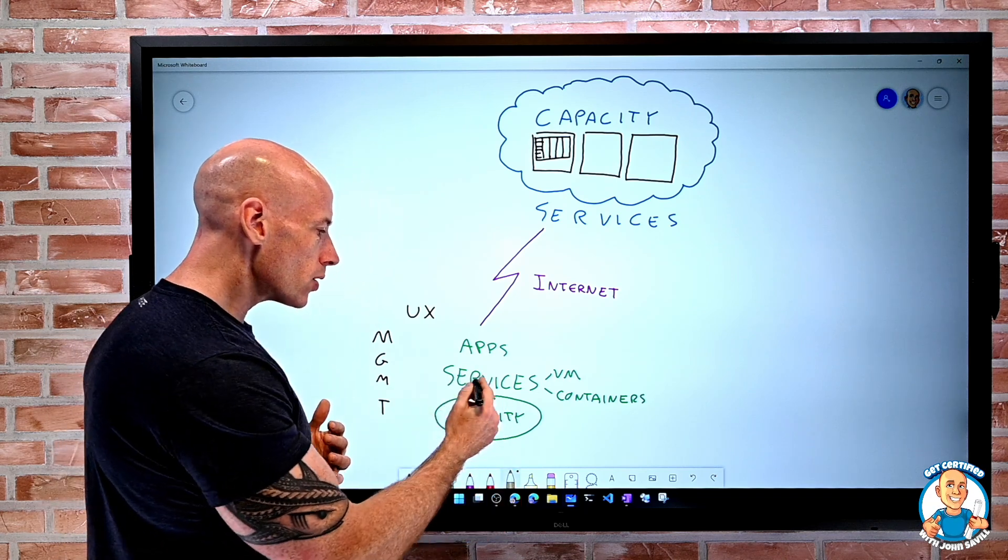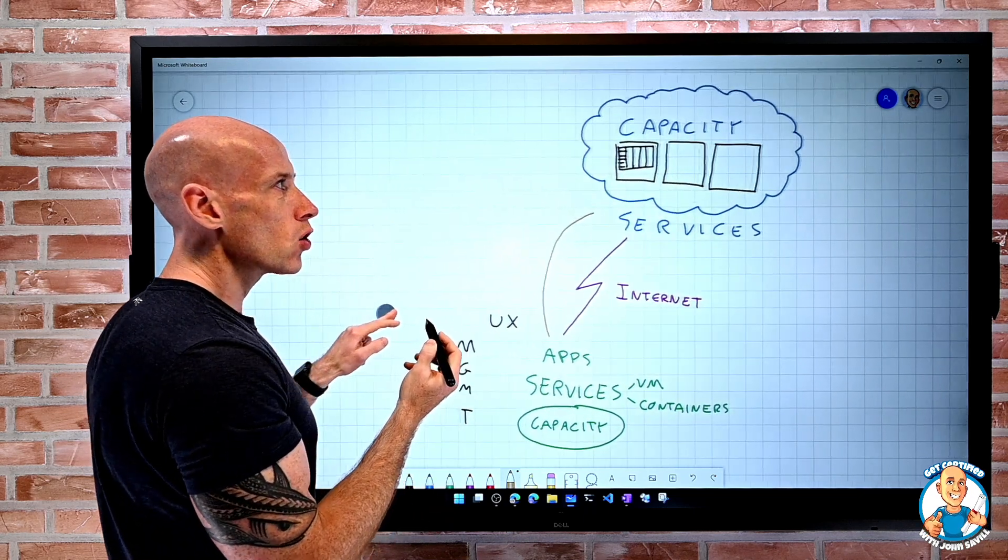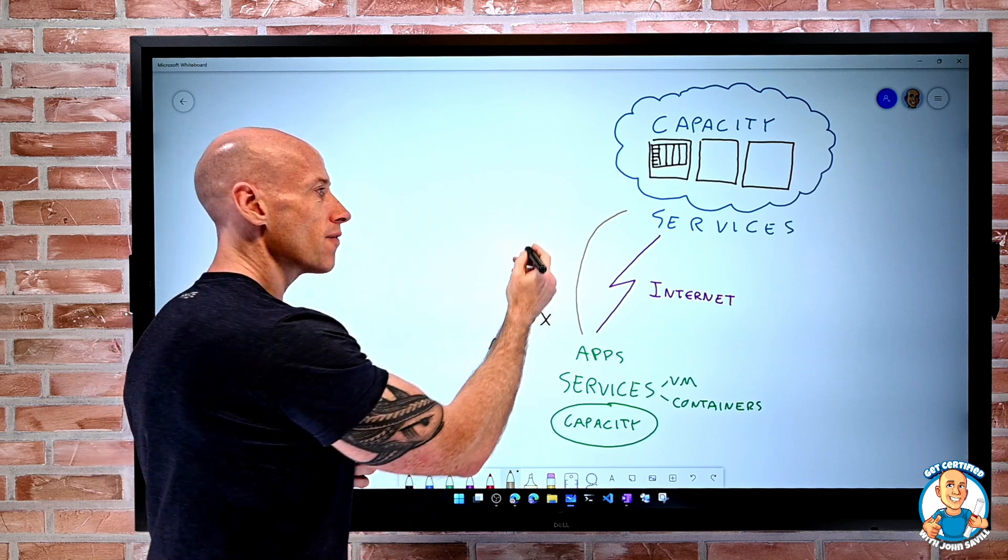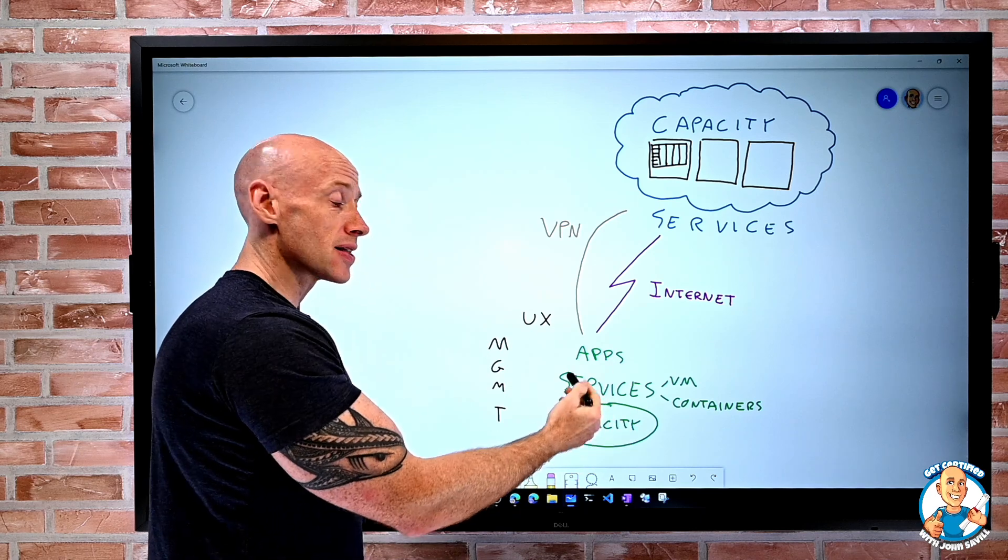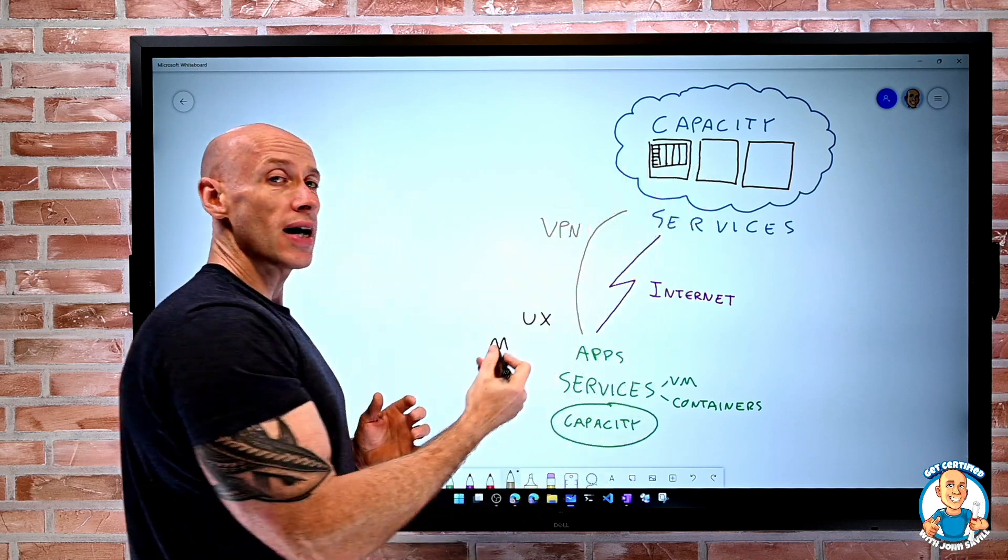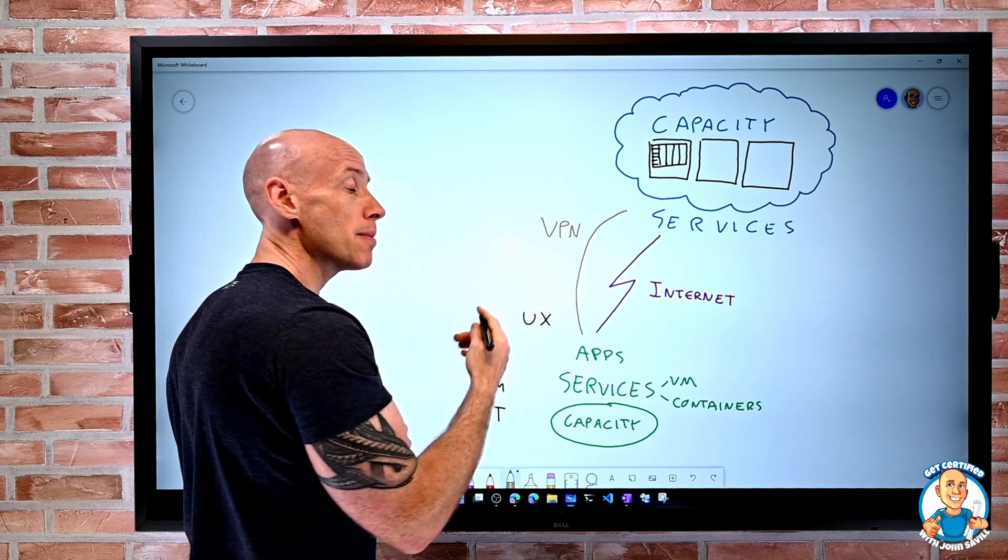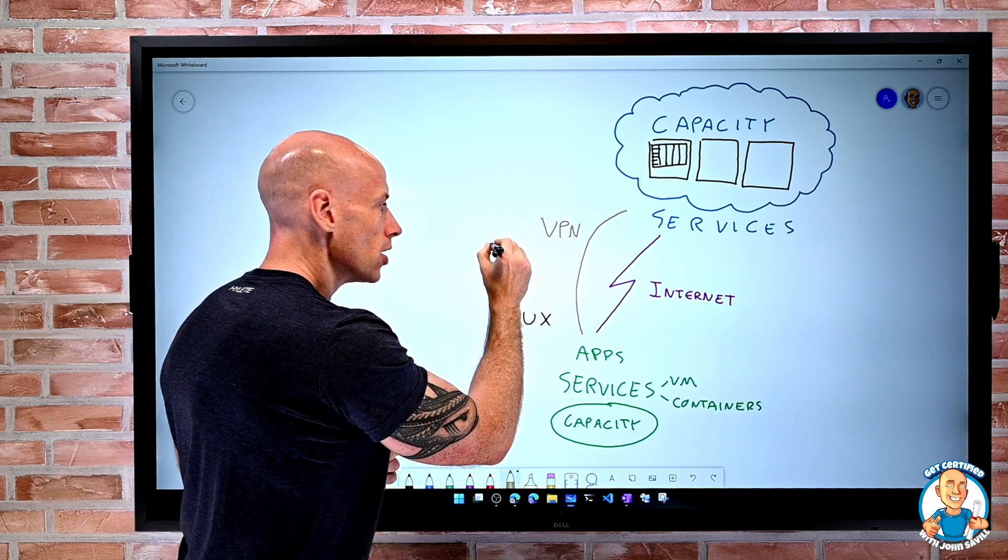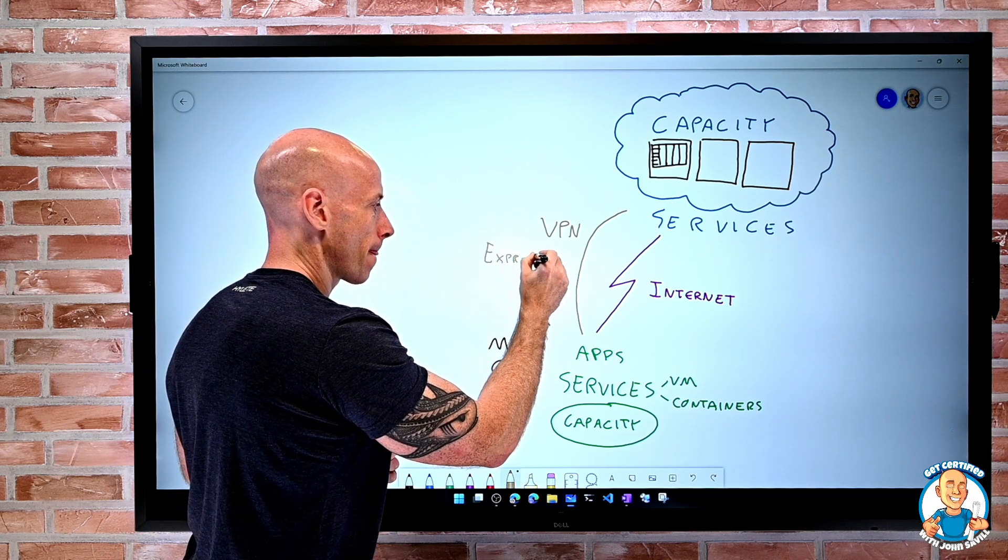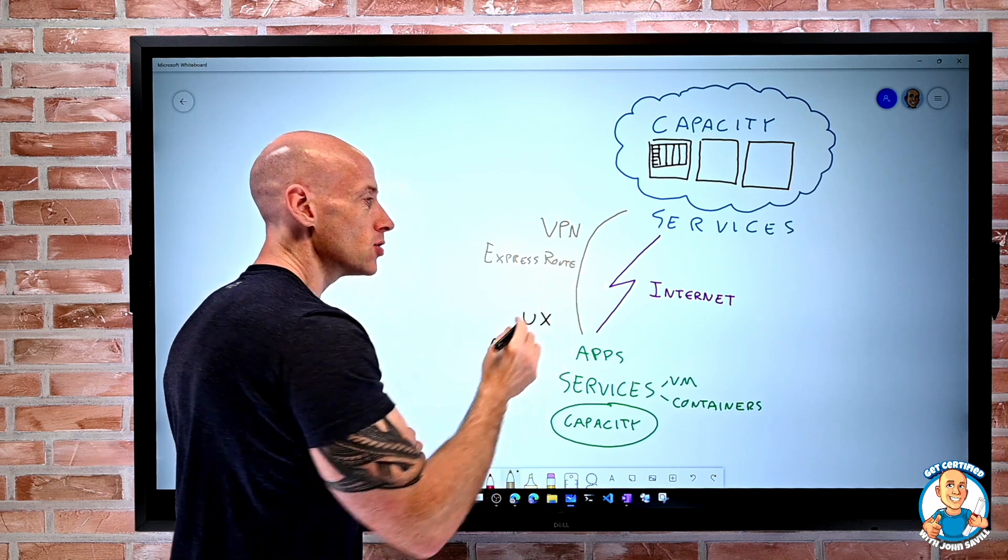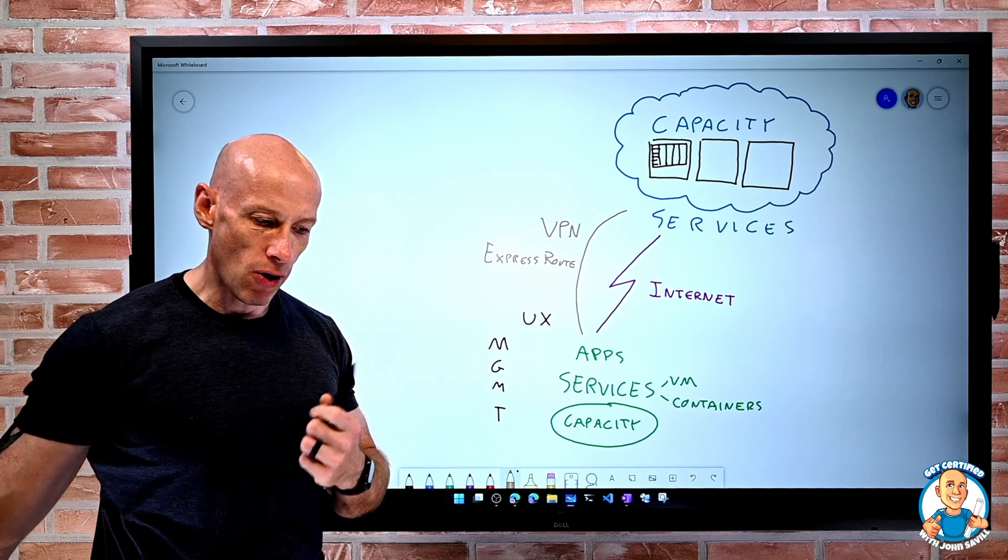So while, yes, that definitely is an option, what you'll also see is for a lot of organizations, they have private connectivity. That private connectivity could be in the form of some kind of virtual private network, like a site-to-site connecting this site to a network construct in Azure. It could even be a private physical connection. You'll hear things like Express Route. So yes, by default, it's internet connected, but there's also this idea of private connectivity.